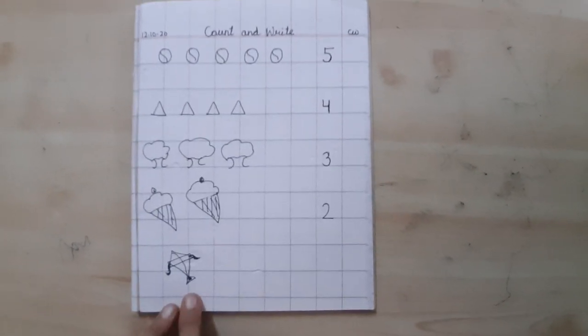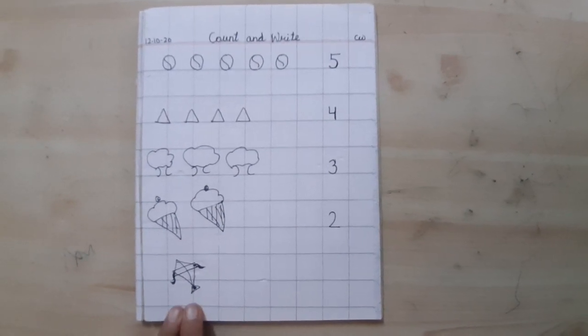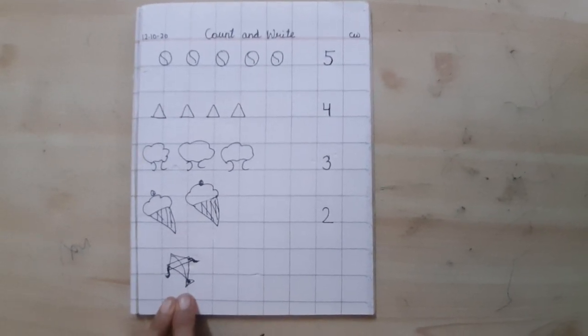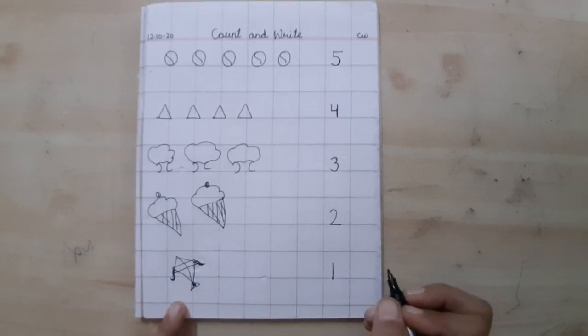And this is kite. And how many kites are there? Only one. Only one kite is there. So we write down 1. Ok students.